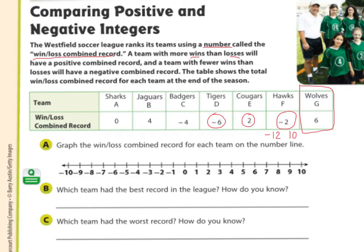So what we're going to do is graph these win-loss combined records for each team on the number line. The Sharks were at 0 — they had the same number of wins as losses. The Jaguars had a win-loss record of 4, the Badgers negative 4, the Tigers negative 6, the Cougars 2, the Hawks negative 2, and the Wolves 6.